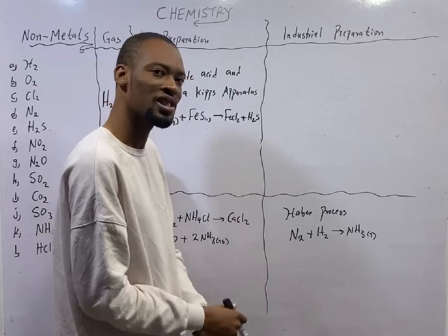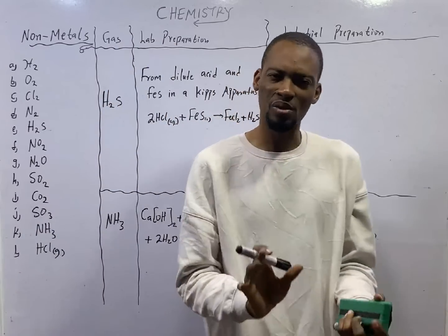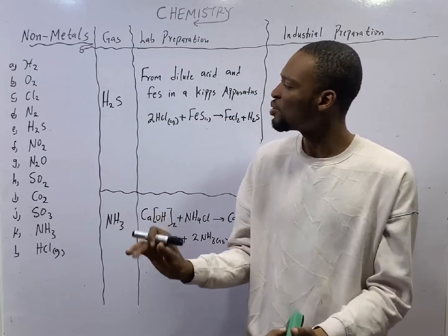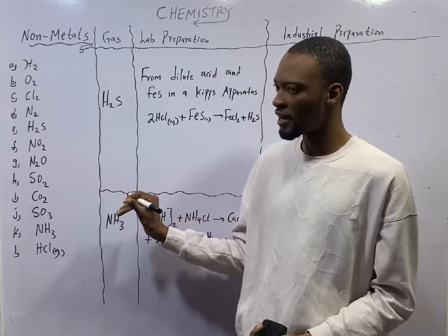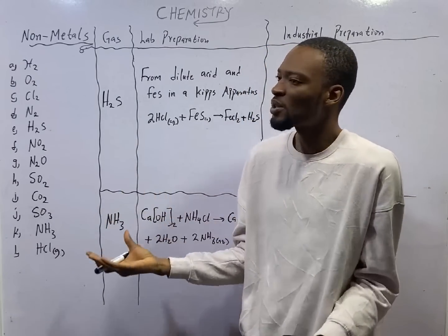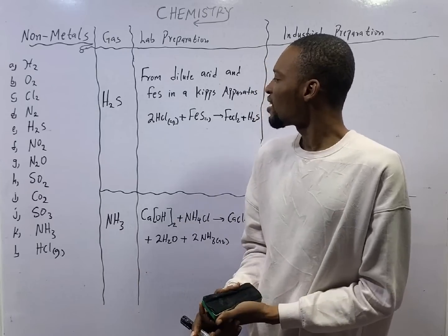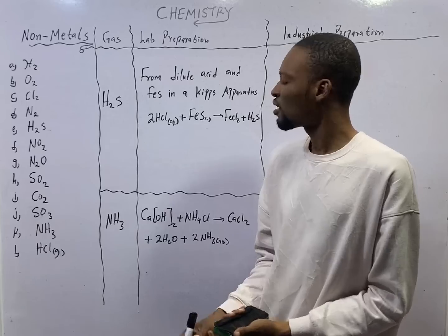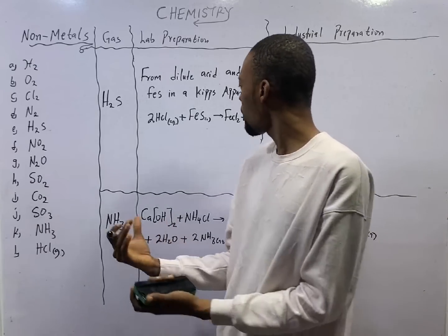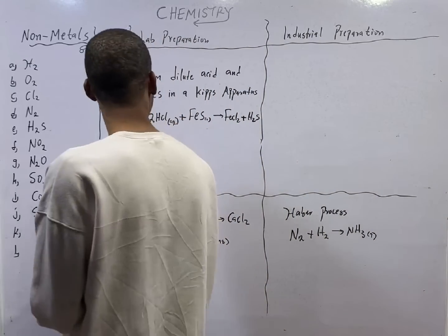Kipp's apparatus is simply the apparatus or setup that is used to produce or to prepare hydrogen sulfide gas. Kipp's apparatus is simply when hydrochloric acid reacts with iron sulfide with evolution of the production of iron chloride and hydrogen sulfide gas.